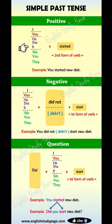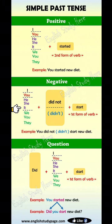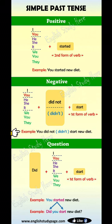For positive: I, you, he, she, it plus started. For example: you started a new diet. For negative: I, you, he, she, it plus did not start. For example: you did not start a new diet.